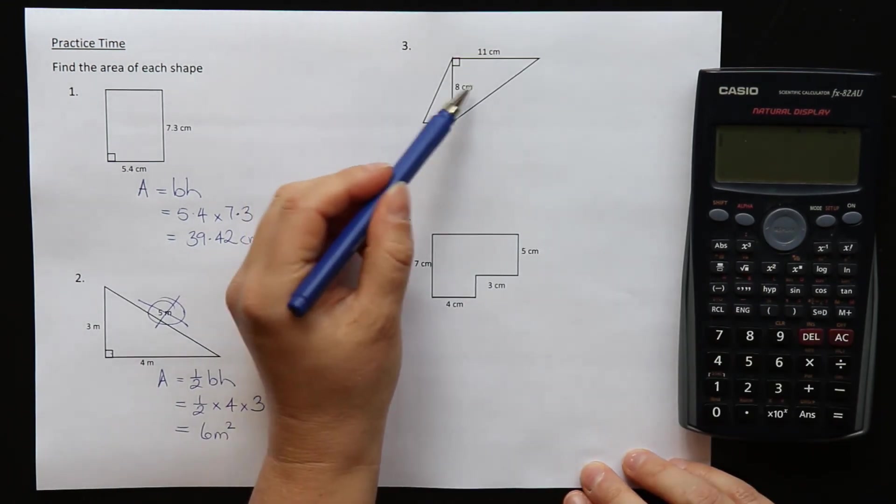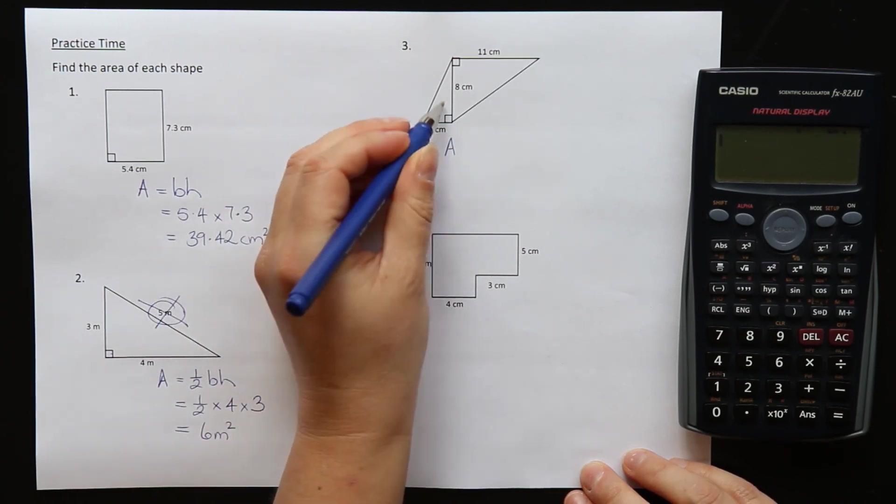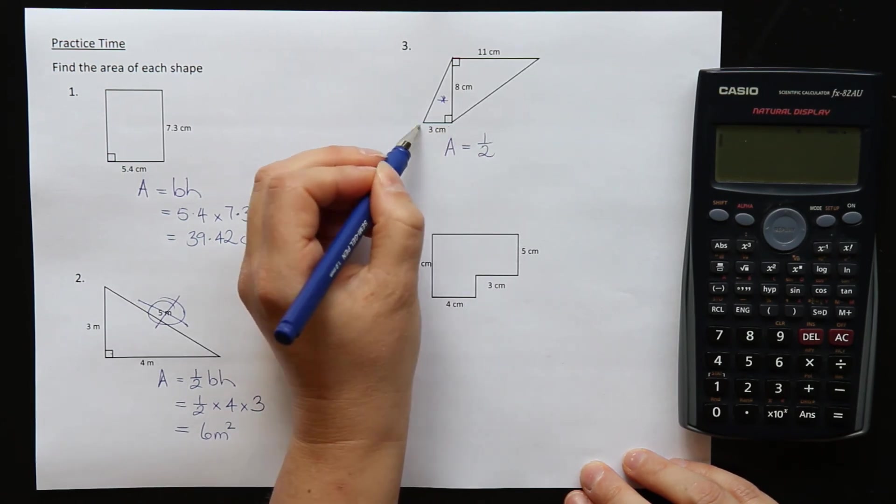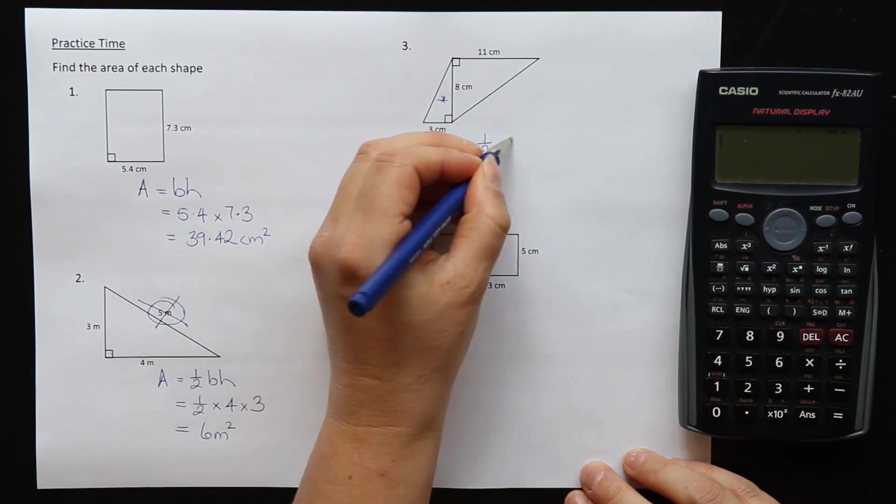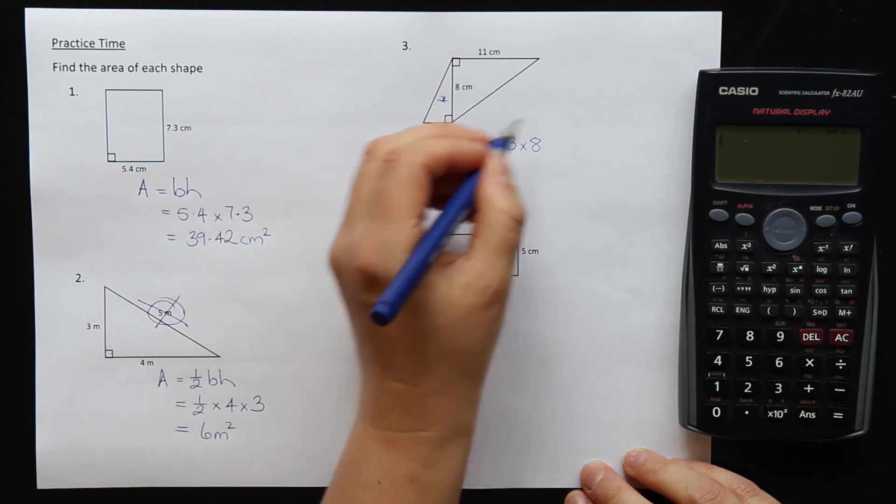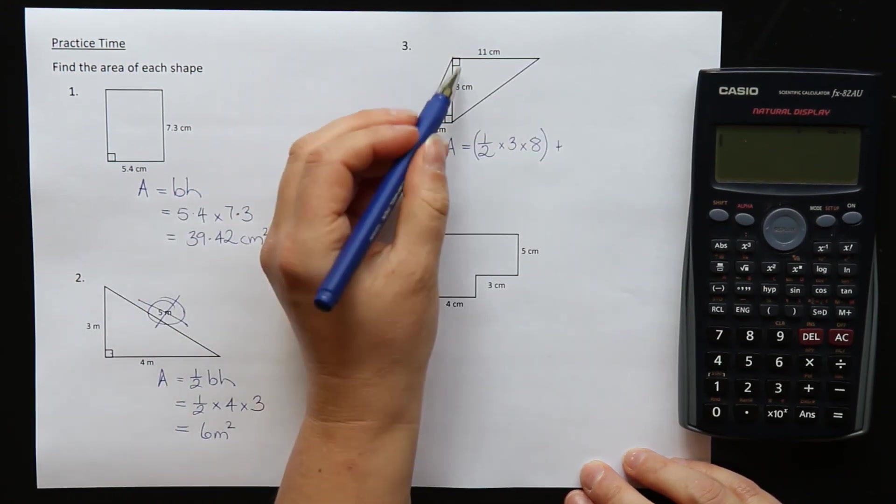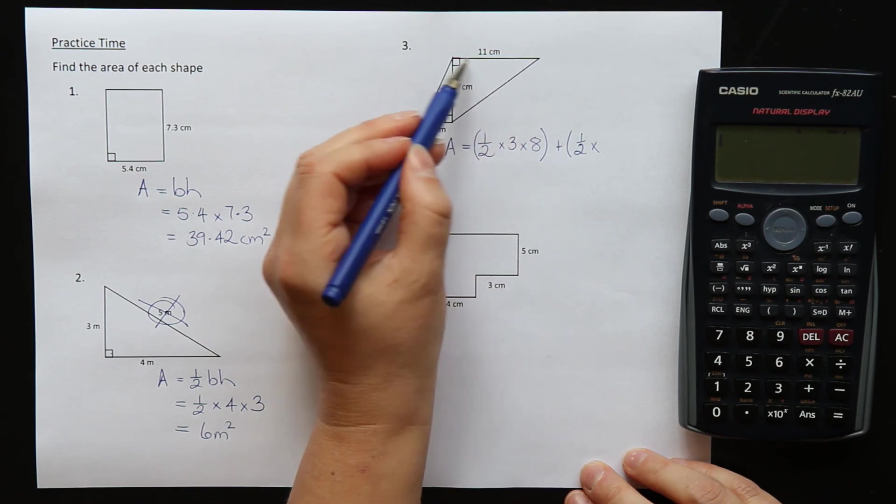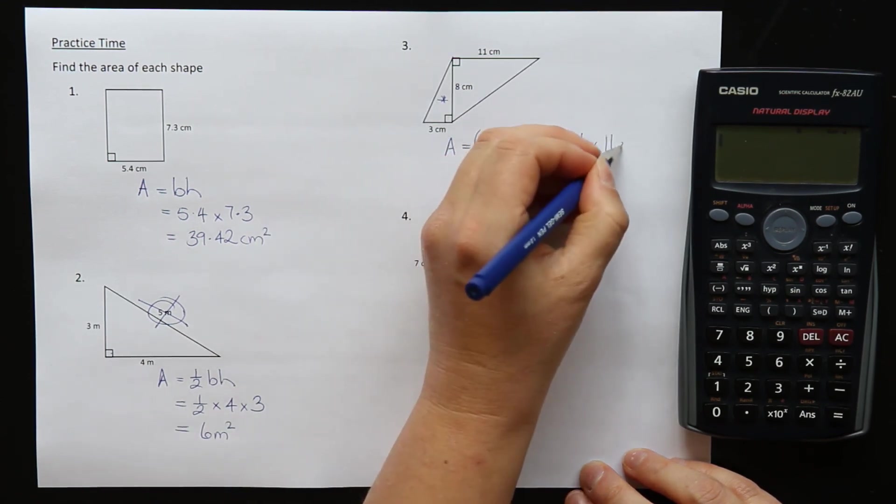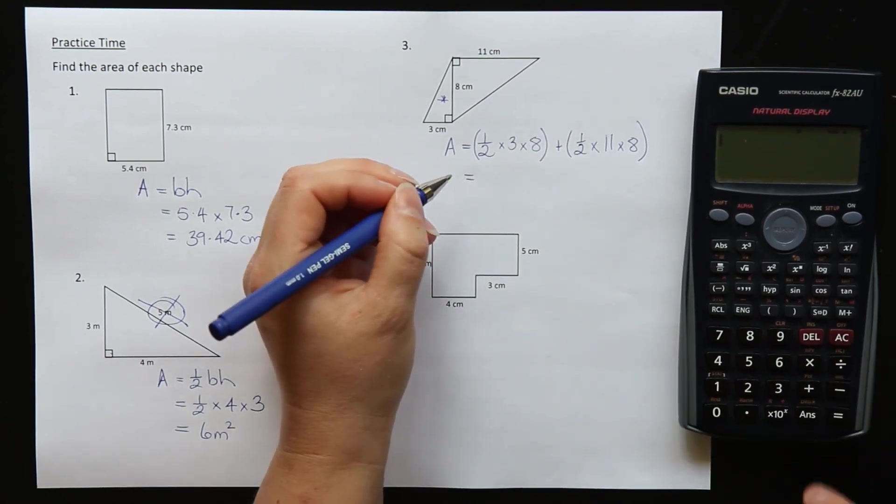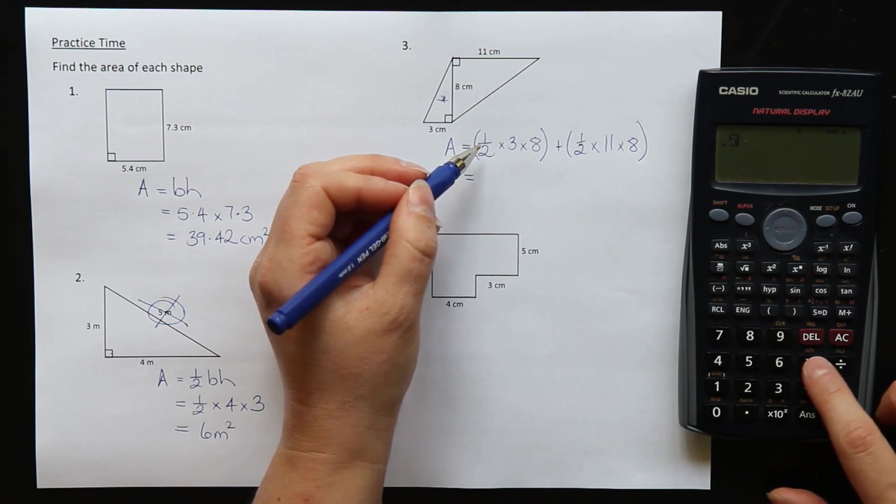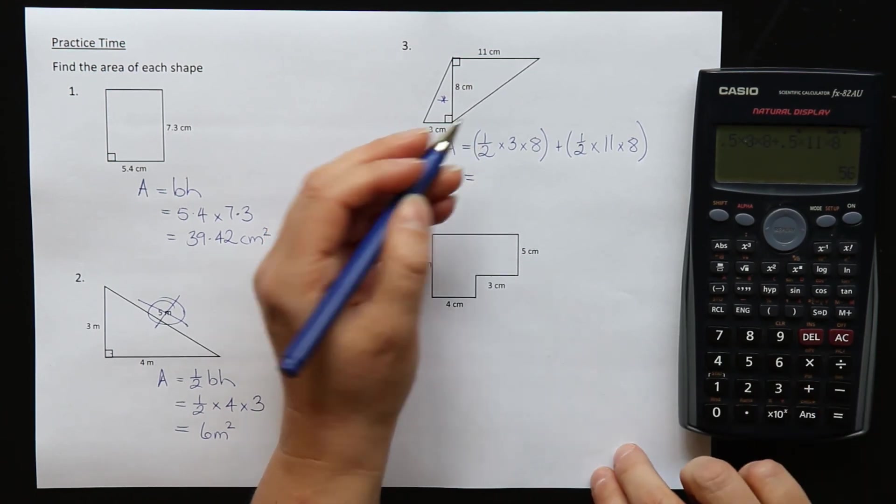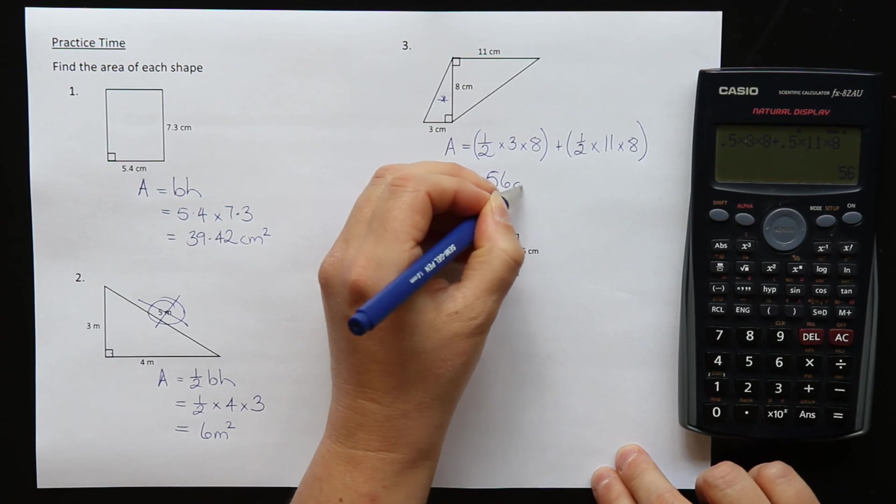In question three we have two triangles connected together here. Let's do this little triangle here first. The formula for triangle is half the base times the height. My base is 3 and my height is 8, so it's half times 3 times 8. That's my first triangle plus the big triangle now is also half base times height. So half times base and height is 11 and 8. We just have to type it in to get the answer. I type in 0.5 for half because it's just faster to type in. So that equals 56 centimeters squared.